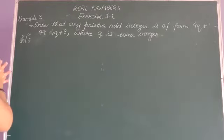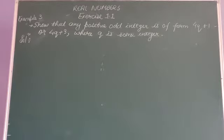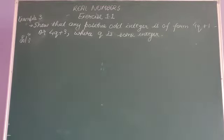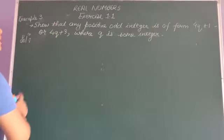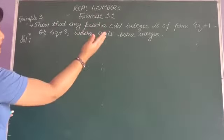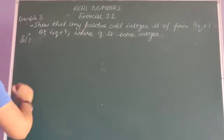Here the question is stating that any positive odd integer is of the form 4Q plus 1 or 4Q plus 3, where Q is some integer. The strategy to do this kind of question is that if we have to prove the integer in the form of that expression — here it is 4Q plus 1 or 4Q plus 3.